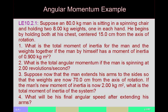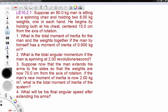Let's look at a slightly longer, more complex version of that example. A man sitting in a spinning chair holds a weight in each hand, starting with both at his chest. We want to know what happens if the man extends his arms and moves the two weights out away from himself. We expect him to slow down, but we want to see exactly how much.